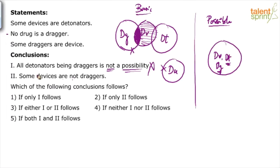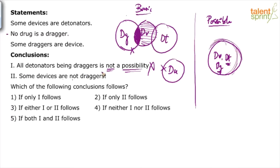So the second conclusion follows the basic diagram. But will it follow all possible diagrams? No. If you take the possible diagram we drew, the second conclusion becomes false. A definite conclusion should satisfy not only the basic diagram but all possible diagrams as well. In the possible diagram, all the devices are draggers, so we cannot say some devices are not draggers — Conclusion 2 is also wrong. So neither Conclusion 1 nor Conclusion 2 follows. Option 4 would be the answer.